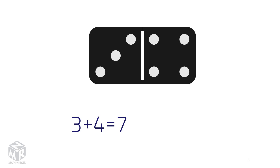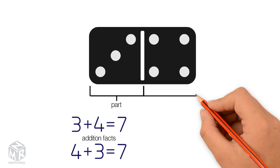3 plus 4 equals 7. 3 and 4 are the addends. 7 is the sum. We can change the order of the addends and the sum will remain the same. 4 plus 3 is also equal to 7. 3 plus 4 equals 7 and 4 plus 3 equals 7 are called related addition facts because we get the same sum using different orders. Note that we add two parts to find the whole.